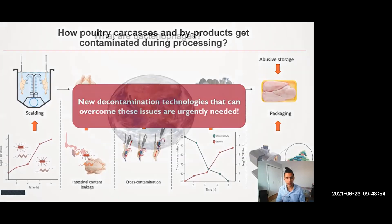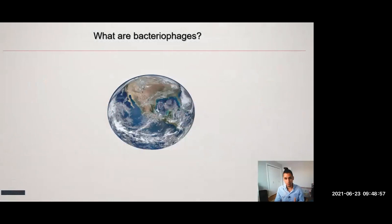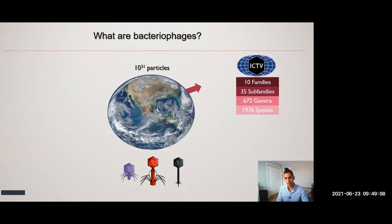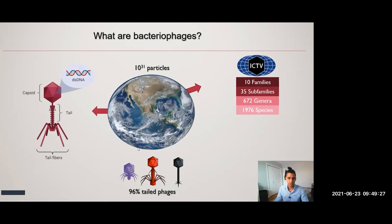The strategy we want to use is the implementation of bacteriophages. Bacteriophages, or phages for short, are the most abundant biological entity on the planet, with approximately 10 to the 31 particles. They are very diverse; according to the International Committee on Taxonomy of Viruses, they can be classified into a large number of families, sub-families, genera, and species. The most common family is tail phages, belonging to the Caudovirales, comprising approximately 96% and characterized by having a tail and double-stranded DNA.